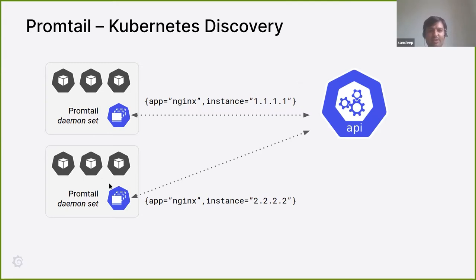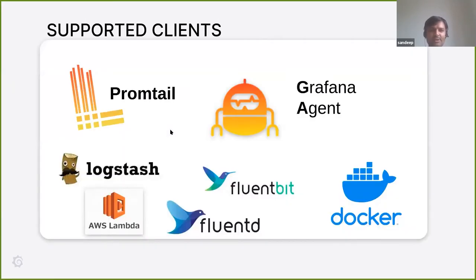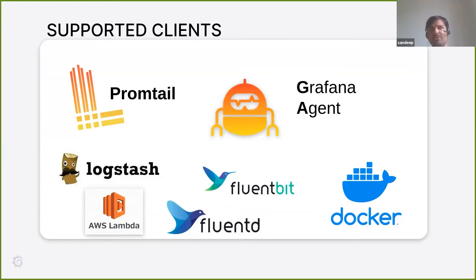We support various clients. Promtail is recommended when running with Kubernetes or scraping static logs from VMs. There's also Grafana Agent which embeds Promtail — you can run Grafana Agent to scrape all metrics, logs, and traces from your Kubernetes workloads. For other environments, there's Logstash, Lambda, Fluentbit, Fluentd, and a Docker driver for various scenarios where you want to scrape logs.